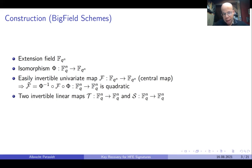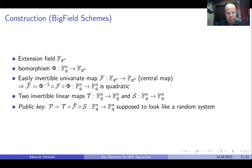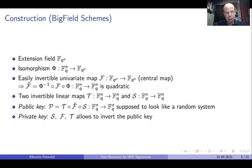To hide the structure of the central map in the public key, we choose two invertible linear maps T and S over the vector space F_q^n and define the public key as P = T ∘ f-bar ∘ S, which is a quadratic map over the vector space F_q^n. It is supposed to look like a random system and therefore hard to invert. The private key consists of the three maps S, f, and T, and therefore allows to invert the public key.